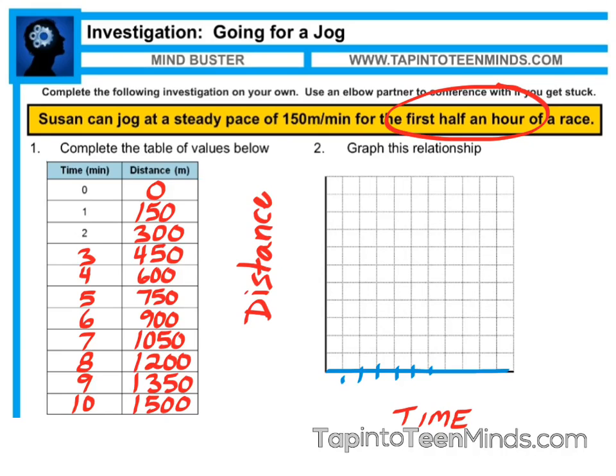Plotting our points, we'll notice that since it is a runner going at a steady pace or at a constant pace, we should get a straight line. Let's plot some of our coordinates here to ensure this is the case. At zero comma zero, that means we're starting at zero on the x-axis and zero on the y-axis. One comma 150 is going to have us go over 1, up 150, and you'll note that our relationship is in fact linear.